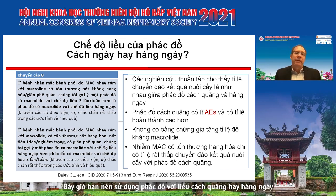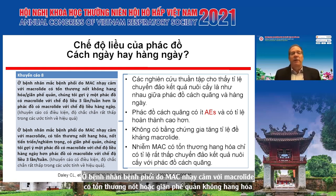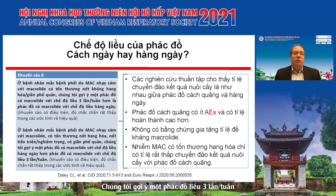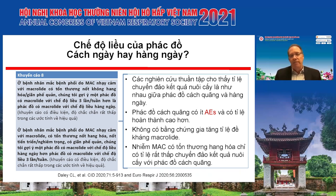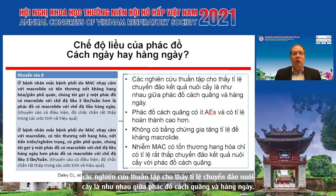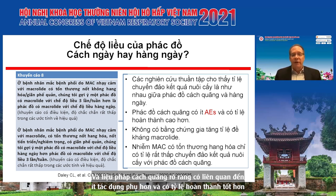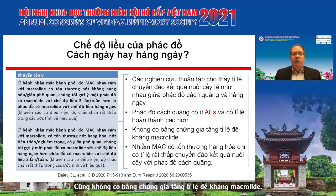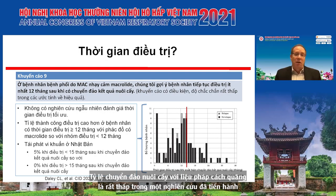Should this be given every day or intermittently? For non-cavitary nodular bronchiectatic disease, we suggest three-times-a-week therapy. However, for cavitary or more severe disease, we recommend daily therapy. Evidence from cohort studies shows similar culture conversion rates with intermittent versus daily therapy for non-cavitary disease, and intermittent therapy is associated with fewer adverse events, better completion rates, and no increase in macrolide resistance. For cavitary MAC, however, there are very low conversion rates with intermittent therapy — as low as 4% in one study.